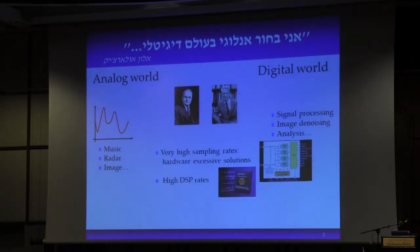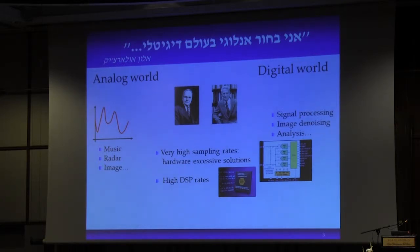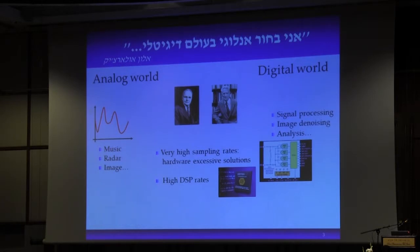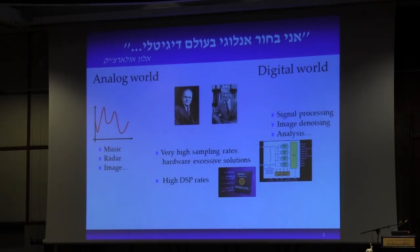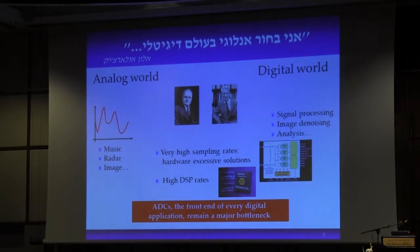In modern applications, signals often have bandwidths on the order of several gigahertz, which is very hard to handle based on the Shannon-Nyquist theorem. To reach those high rates we need excessive hardware solutions and interleaved structures, which are limited by analog bandwidth. Even if we manage to sample at high rates, we end up with millions of samples to process. Both the high analog rates and high DSP rates are a real bottleneck today, and A-to-D converters — which we used to ignore from a DSP perspective — are now a major bottleneck.